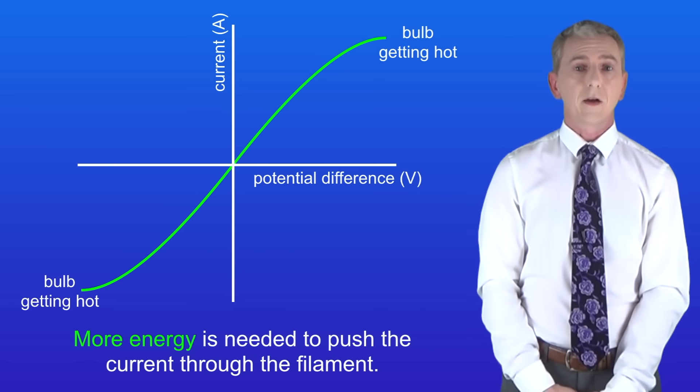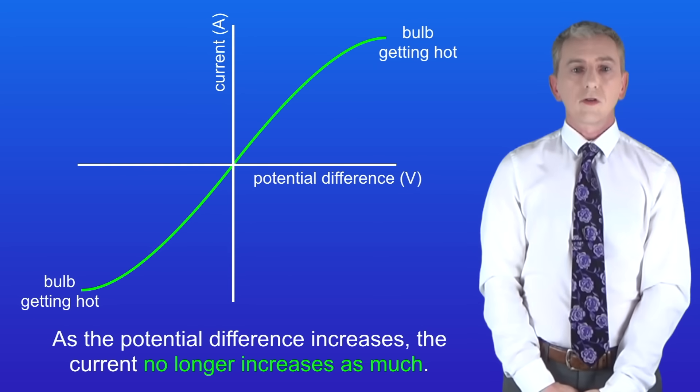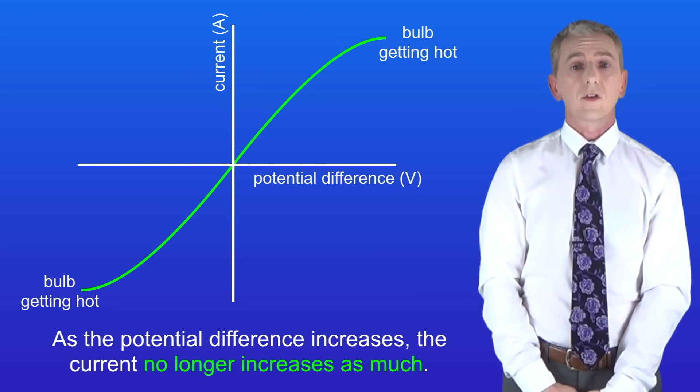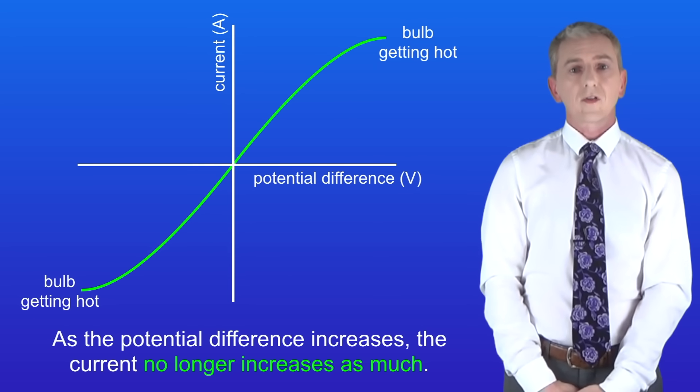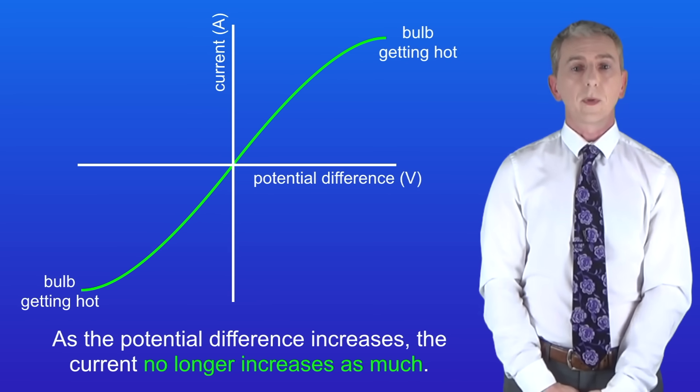Now we can see that by looking at the graph. As the potential difference increases the current no longer increases as much and that tells us that resistance is increasing. So in other words a filament lamp is not an ohmic conductor.